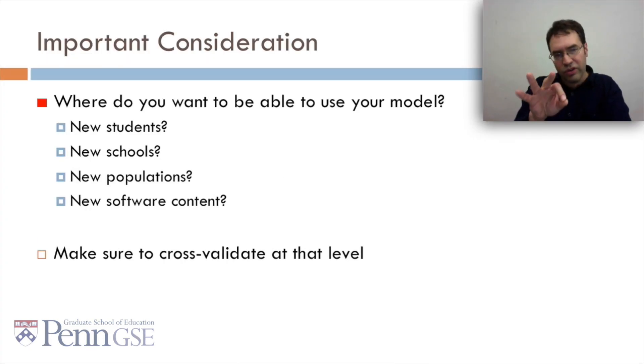The important consideration is, where do you want to be able to use your model? Do you want to be able to use your model on new students, on new schools, on new populations, or on new software content? However you want your model to generalize, be sure to cross-validate at that level. Because if you don't, and you ignore this issue, you might have a model that doesn't work nearly as well as you think it does, in the case you're using it. And that's a problem.